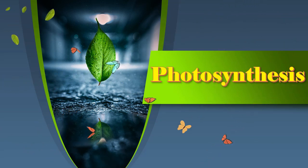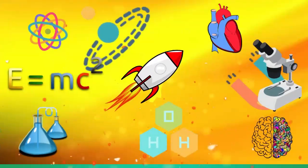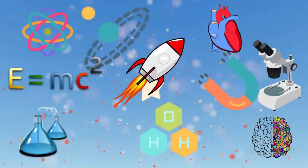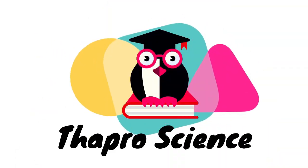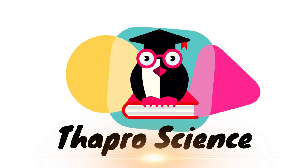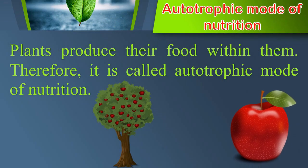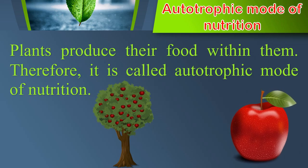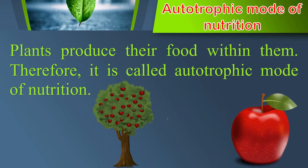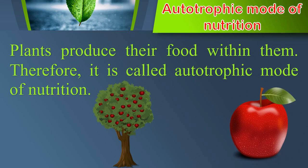Photosynthesis. Plants produce their food within them through what is called Autotrophic Mode of Nutrition. Therefore, it is called Autotrophic Mode of Nutrition.